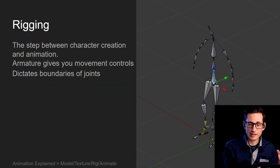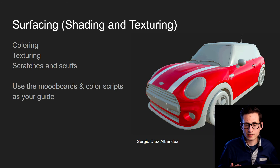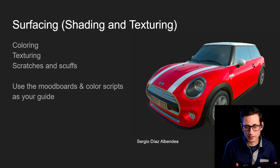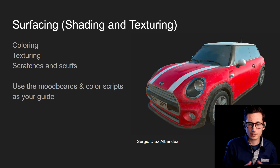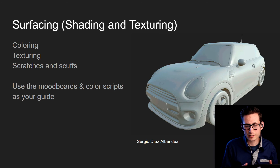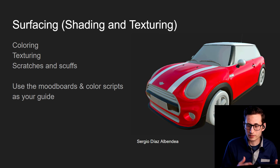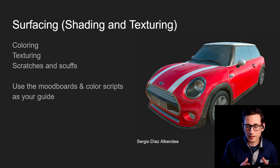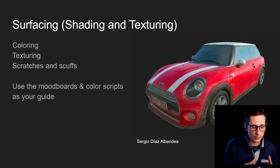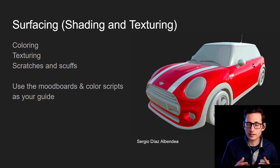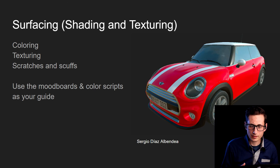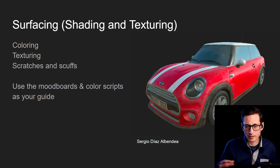The step between character creation and animation is rigging. Surfacing is where you start to give color and texture to the objects you've created. You can see the Mini Cooper starts out as a dull gray color — that's how everything starts in the modeling phase. Then as you move to surfacing, you give things color: what's red, what's white, what's shiny, transparent, translucent, what has texture, what has bumps. This is where you give things lifelike quality. Remember to work off your mood boards and color scripts, because all your objects really make up the color and mood of the shot.